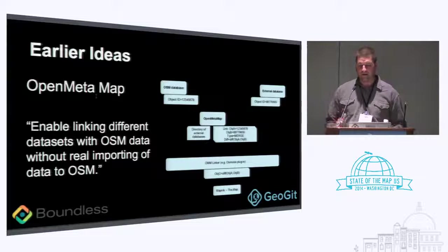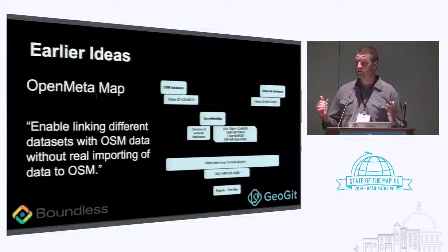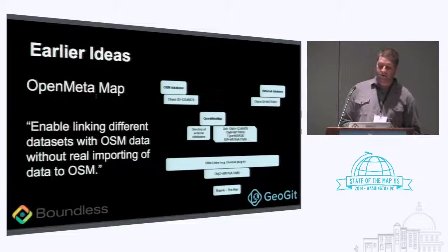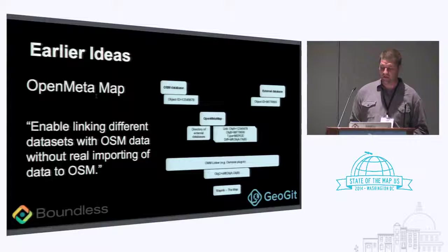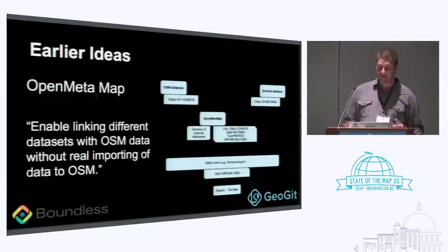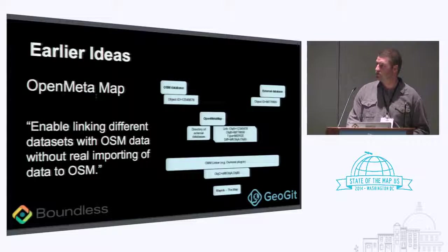Here's an earlier idea around this concept from a friend — there's a proposal on the wiki about having an OSM database and then a series of external databases, and using the concept of an open metamap to link things together, perhaps using an Osmosis plugin and then rendering them together. Instead of importing data directly into OSM, you're just linking external datasets. The proposal got some discussion but has been shelved — it was an interesting early idea.